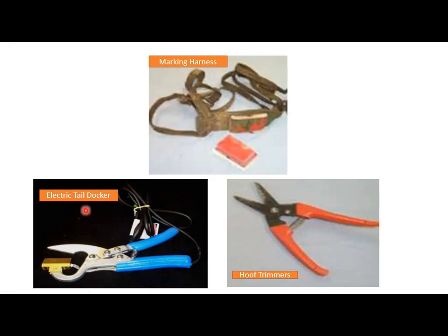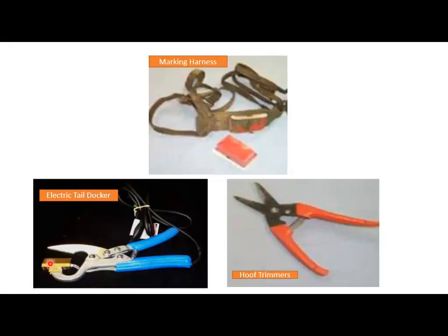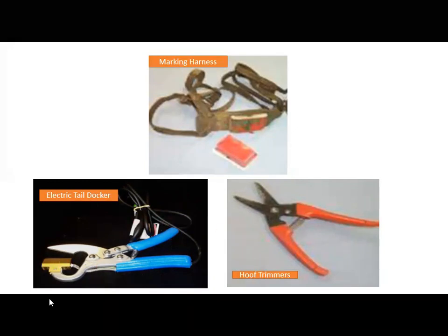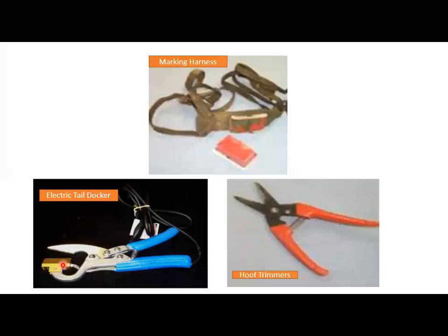This is an electric tail docker. It can be used with most animal species, but it is specifically designed for sheep. It is used for removing a small part of the tail. It works by removing part of the tail and leaving a clean cut that is sealed by cauterization — the heat of the electric cutter cuts and seals the tissue. This is an important tool used on sheep farms.